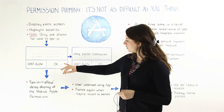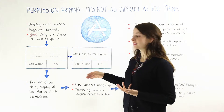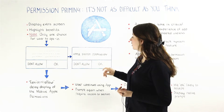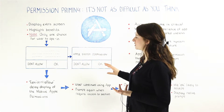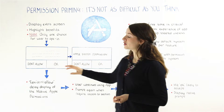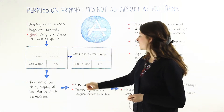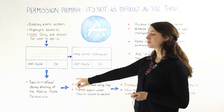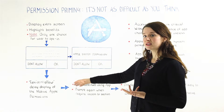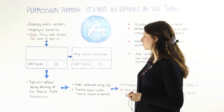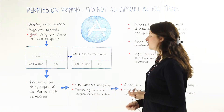If the user taps okay, then they're most likely to tap okay for the actual Apple system permission as well. However, if they tap don't allow, then you delay displaying the native Apple system permission and present it at another time.